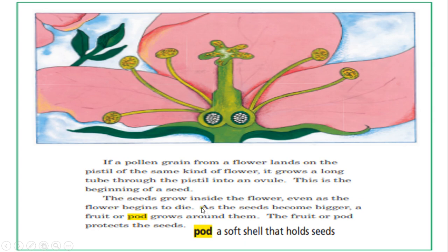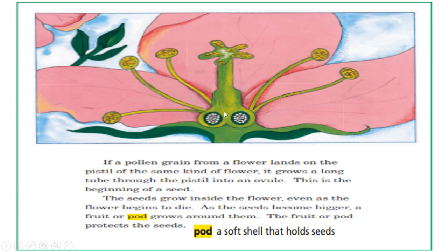The seeds grow inside the flower, even as the flower begins to die. As the seeds become bigger, a fruit or pod grows around them. The fruit or pod protects the seed. If the pollen lands on the pistil of the same kind of flower, it will grow a long tube to an ovule, and this is the beginning of the seed. Inside the flower we will have a pod — the shell that protects and holds the seeds — just like a baby in their mama's tummy.